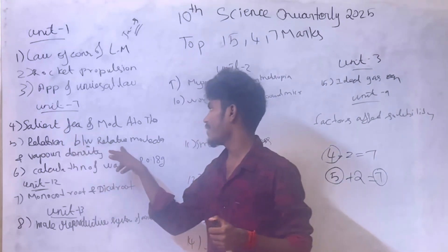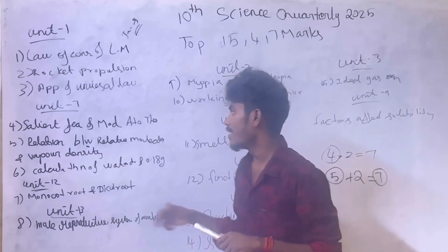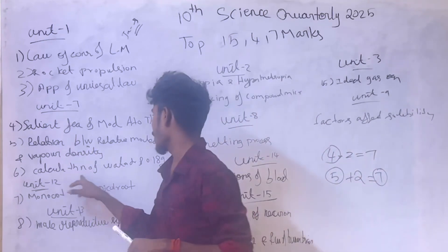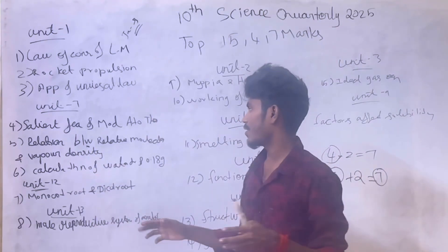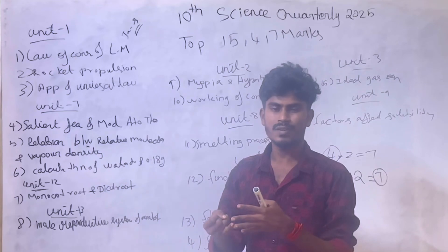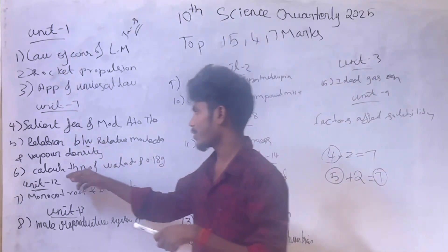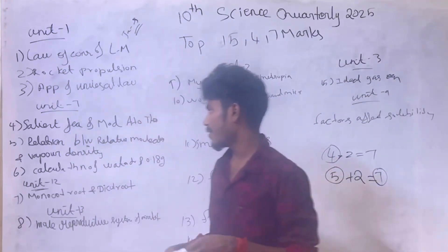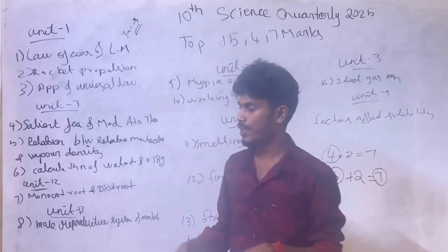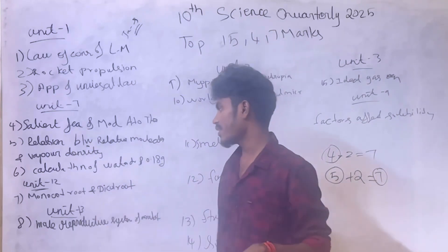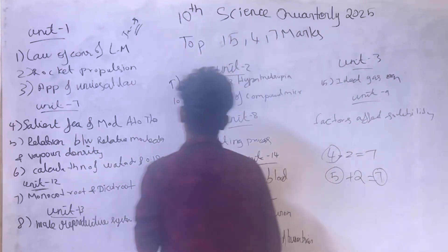The relation between relative molecular mass and vapor density — very very important. Second question: the number of molecules in one drop of 0.18 grams of water. Unit 1: law of monocot root and dicot root — very important. Unit 13: law of wave and reproductive system of rabbit — very important.